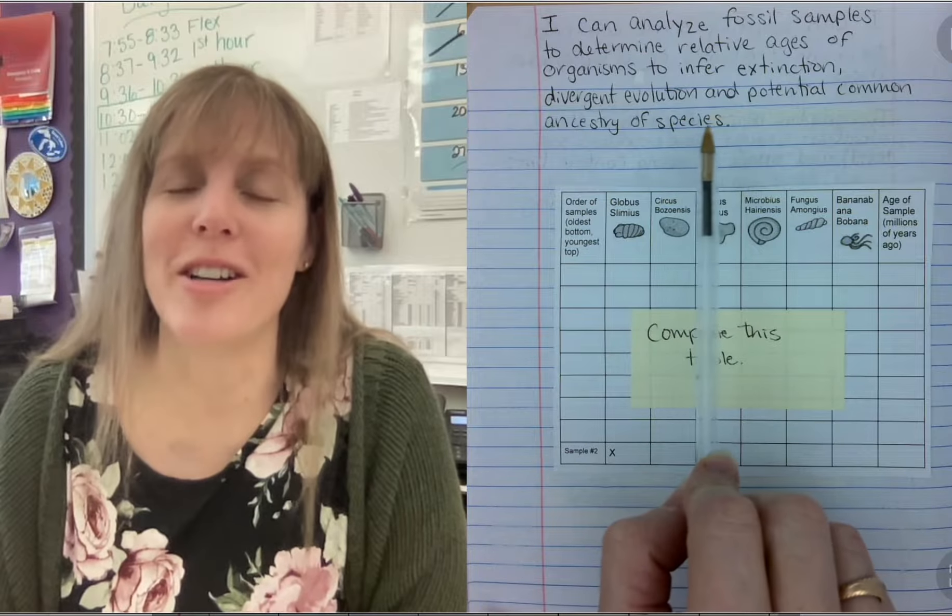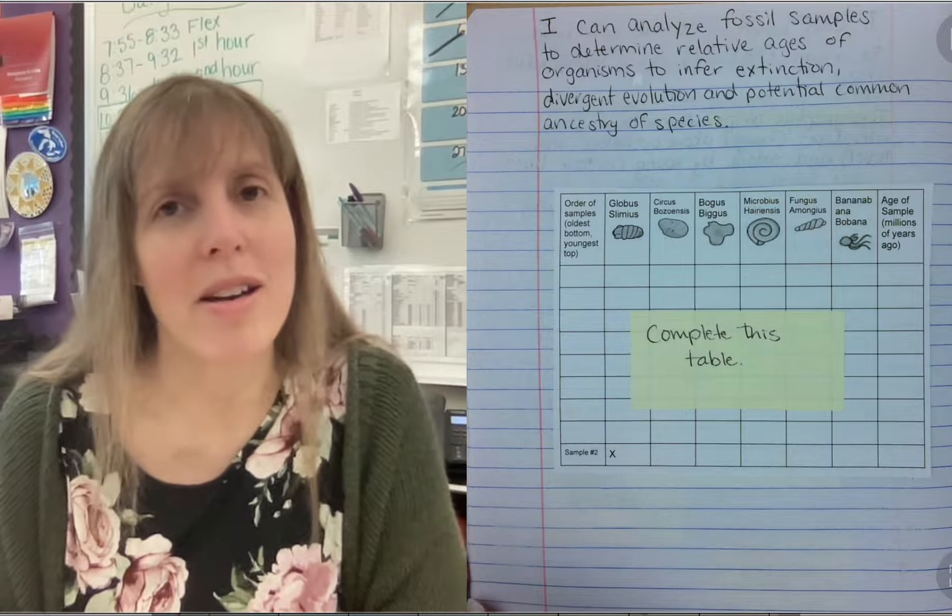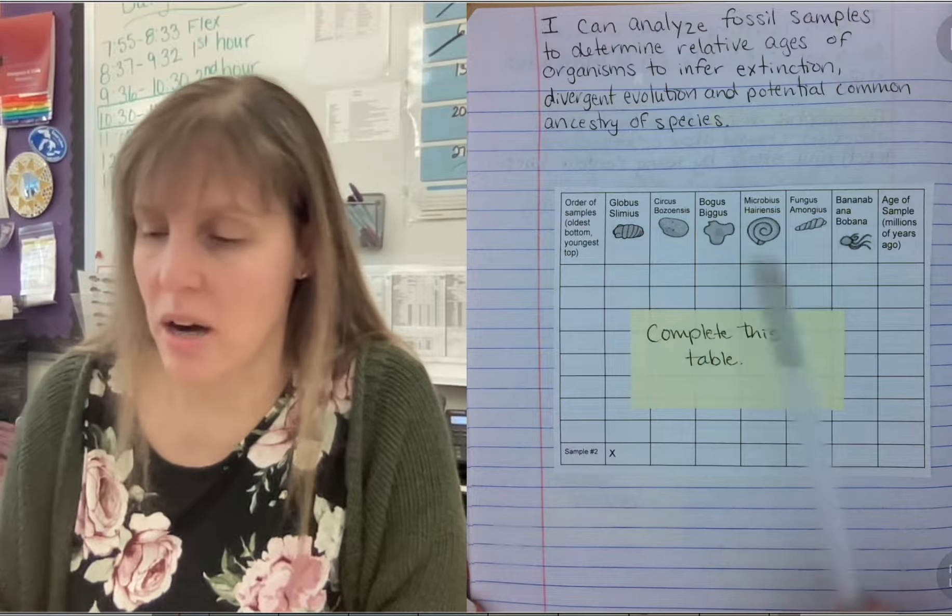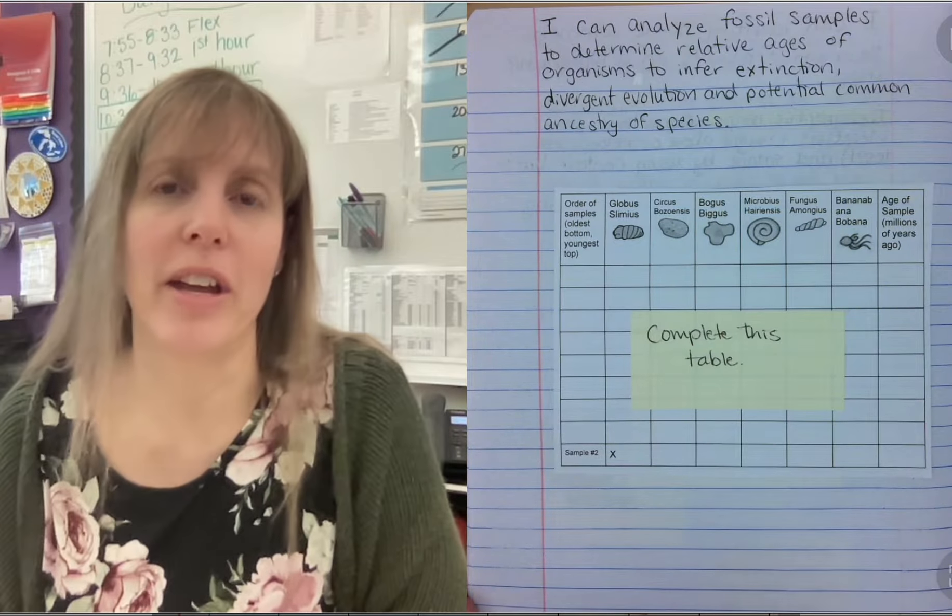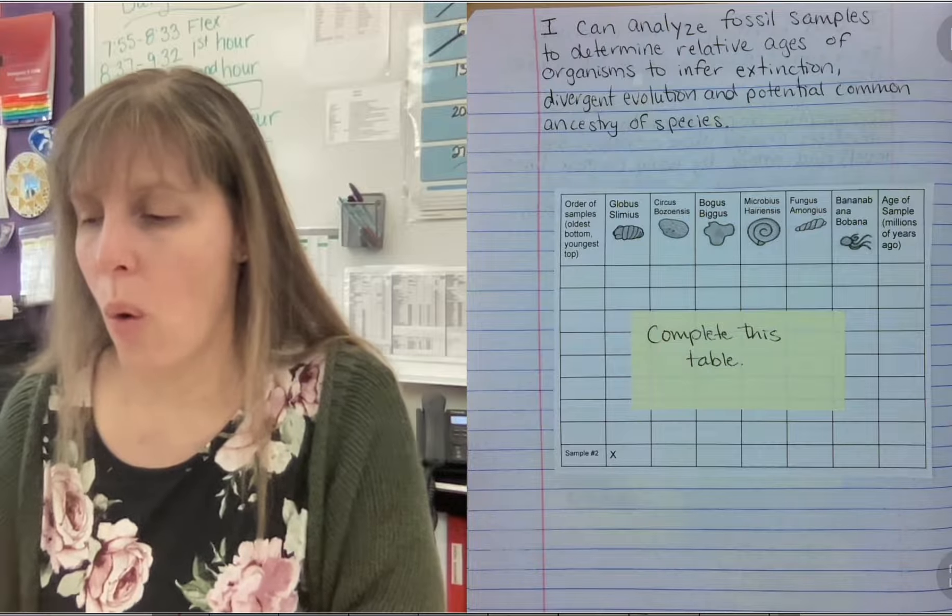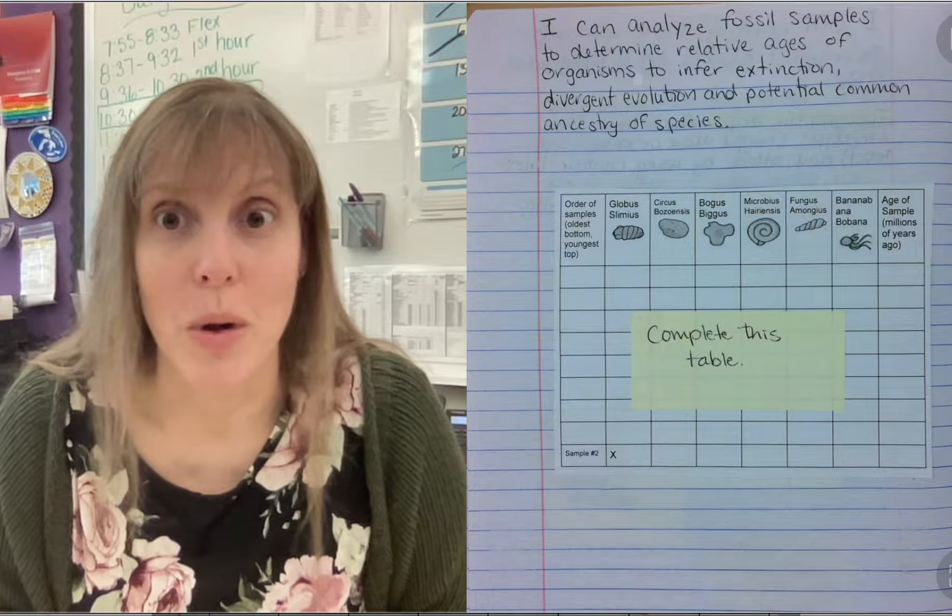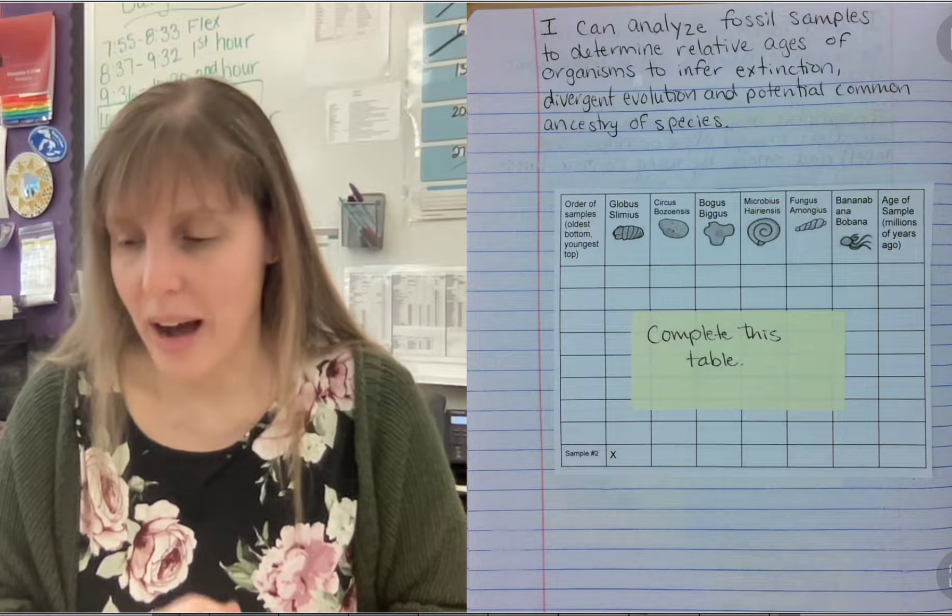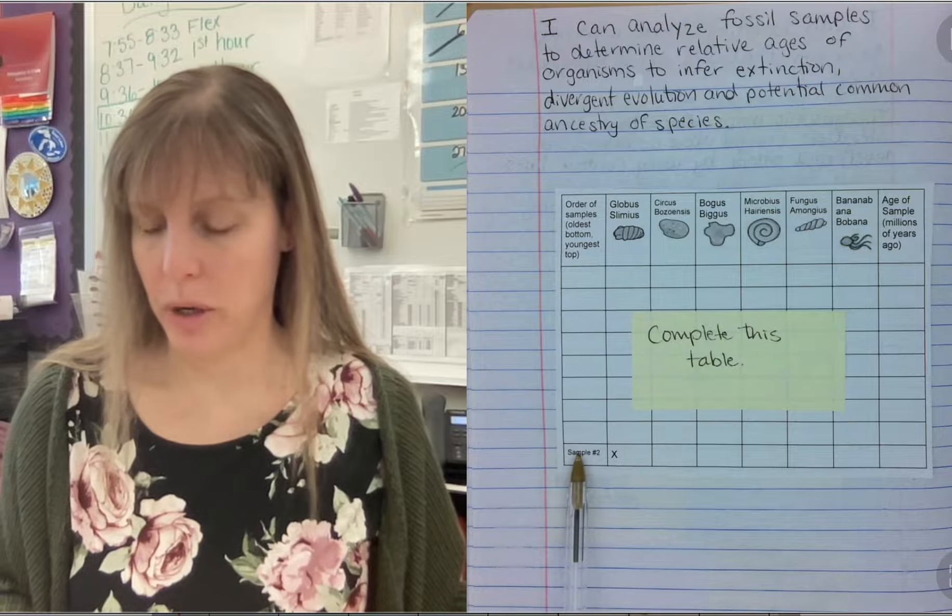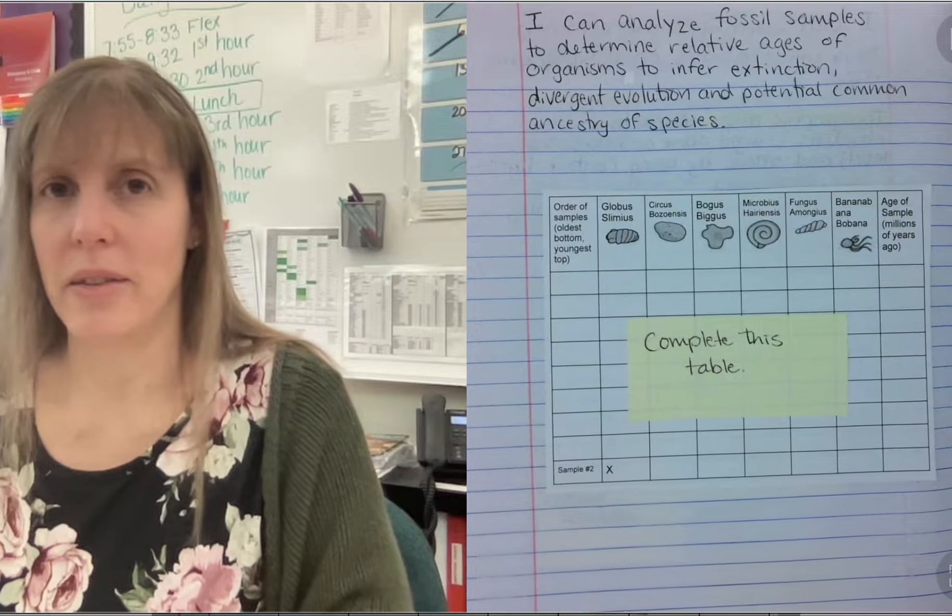Basically, what you're gonna do is you're gonna look at some fossil samples, you're gonna try and figure out how old they are with relation to one another, and then you will put them in order from oldest to youngest and complete the table to figure out which ones may have been extinct or how old the actual fossils were. So the oldest fossil on our table is going to be sample number two. I'm gonna give you some years, and I'm gonna give you some other samples. So let's have a look at the activity together today.